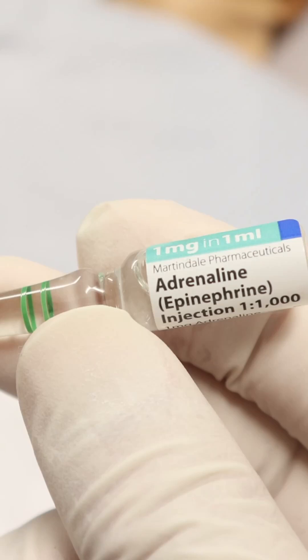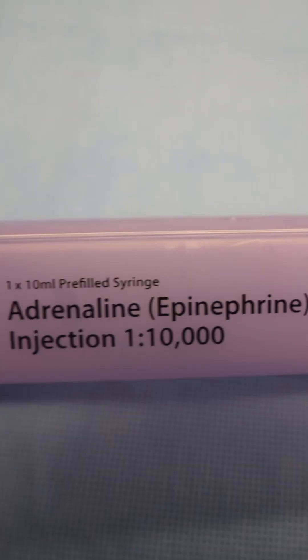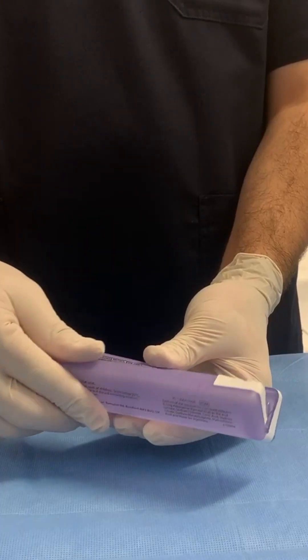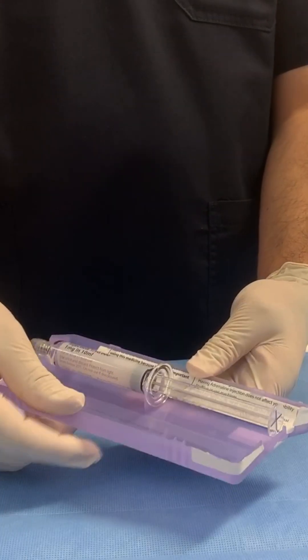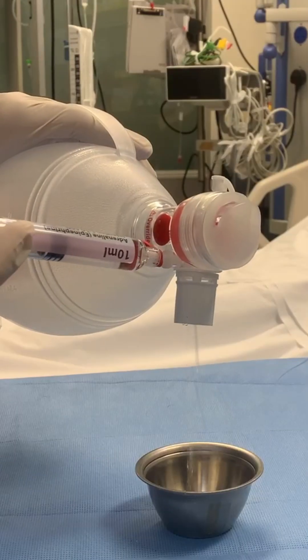Epinephrine has multiple functions. It can increase the heart rate, cause vasoconstriction to increase blood pressure, and cause bronchodilation. You can administer epinephrine by IV, intraosseous, or via endotracheal tube.